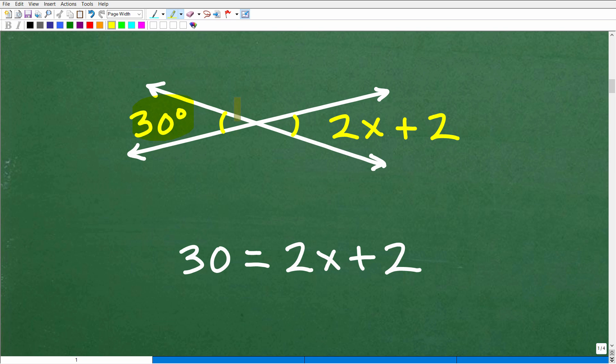What you have to recognize is that this 30 degrees is equal to this expression, which represents the angle measure of this angle. I could get a little bit more fancy and say that's in degrees. This expression measuring this angle is equal to this angle, which is 30 degrees. We can simply equate these two - this is equal to this. So 30 will be equal to 2x plus 2.